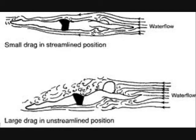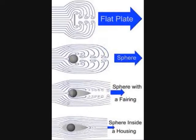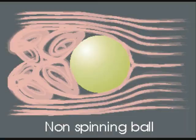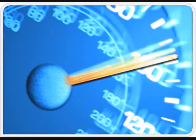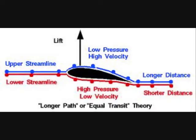Drag is the force that opposes motion. If there is wind when the discus is thrown, then the drag force will be along the direction of relative velocity. Drag depends on speed relative to the air and the angle of attack. The discus drag is therefore not the same as for lift.